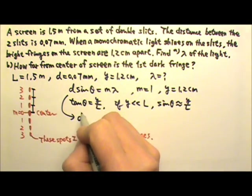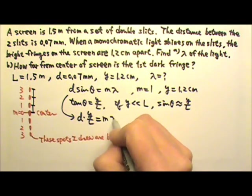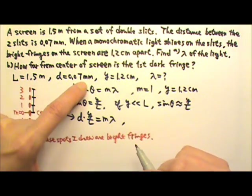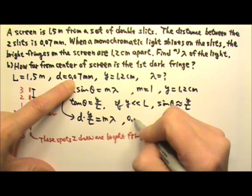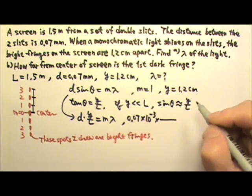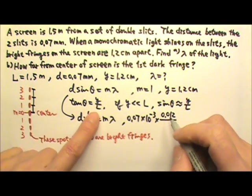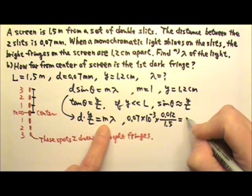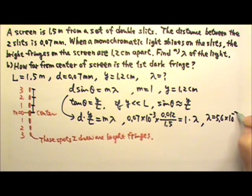Therefore this equation becomes D times Y over L equals M lambda, replacing sine theta with Y over L. Now let's plug the numbers in, keeping all lengths in meters. D is 0.07 millimeters, which is 7 times 10 to the negative fifth meters. Y is 1.2 centimeters, that's 0.012 meters. L is 1.5 meters, M is 1, and we're looking for the wavelength. Doing this calculation, we find the wavelength to be 5.6 times 10 to the negative seventh meter — this corresponds to some sort of yellow light.